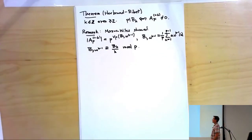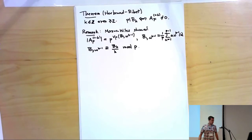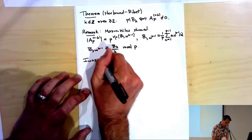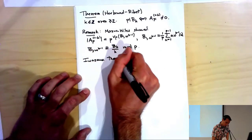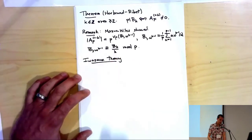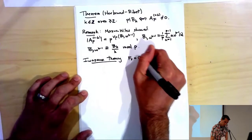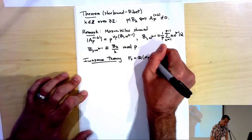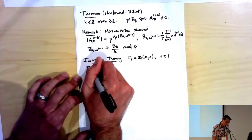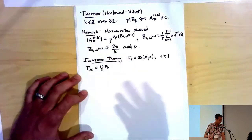Let me turn to Iwasawa theory. In Iwasawa theory we look at a tower: F_r = Q(μ_{p^r}) for r ≥ 1, and F_∞ is the union of these F_r — that's the cyclotomic Z_P-extension of F.